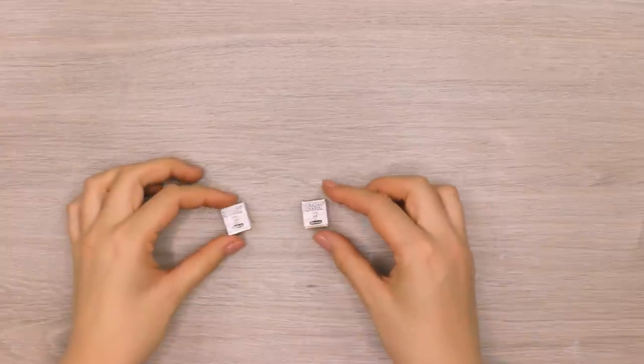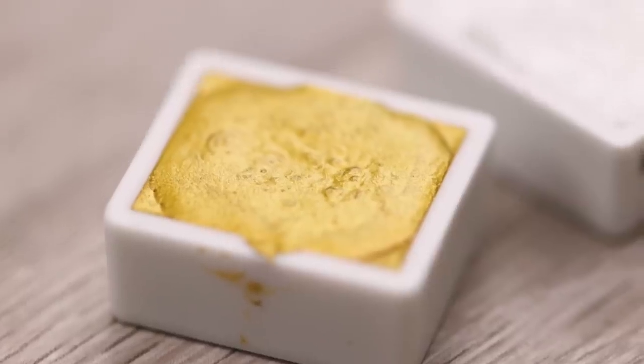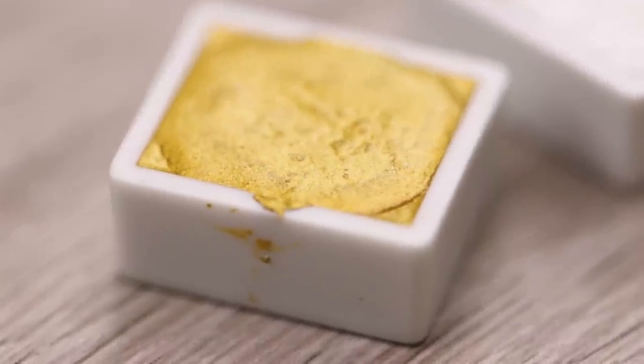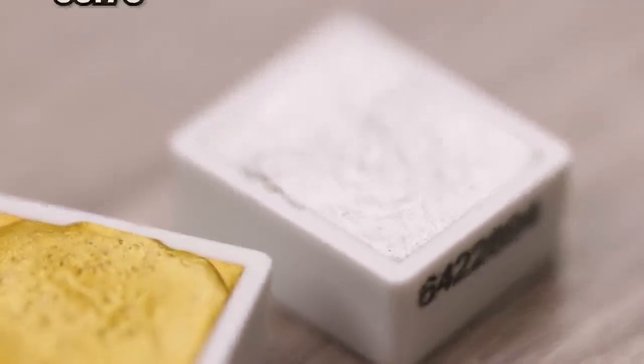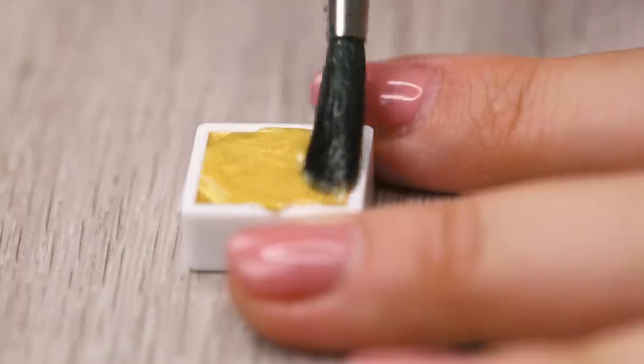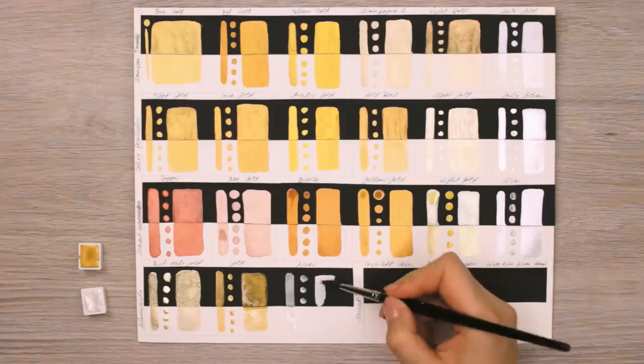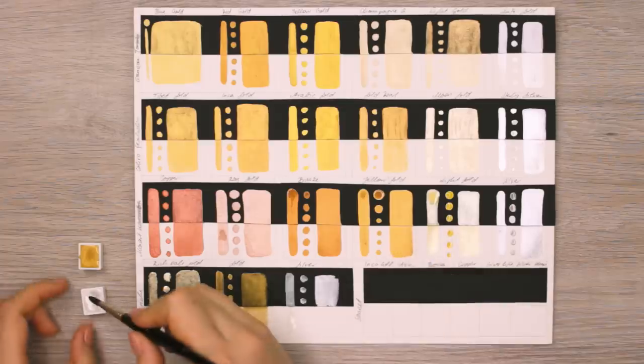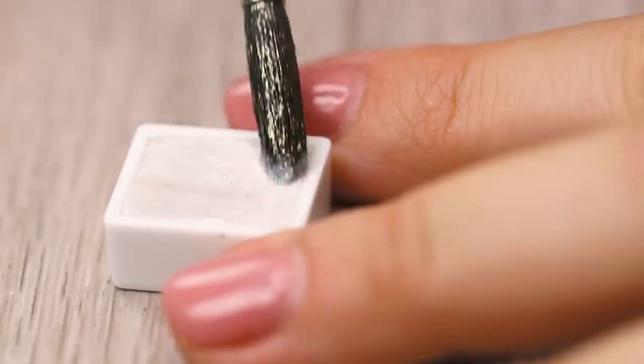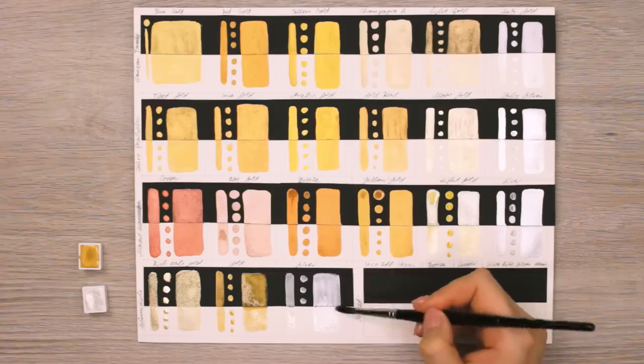Another metallic watercolor paint that I wanted to test out is also by the brand called Schmincke, but this time it comes in pens. You can get them in gold and silver from Amazon for about six pounds. Now the colors look really shiny and shimmery as well, but the paint application was a little bit more streaky compared to the previous sets that we tested. It covers the black paper nicely but it's less visible on the white paper. It's slightly less shiny compared to the previous sets, but I still think it's great for creating small details because here it performed really well.